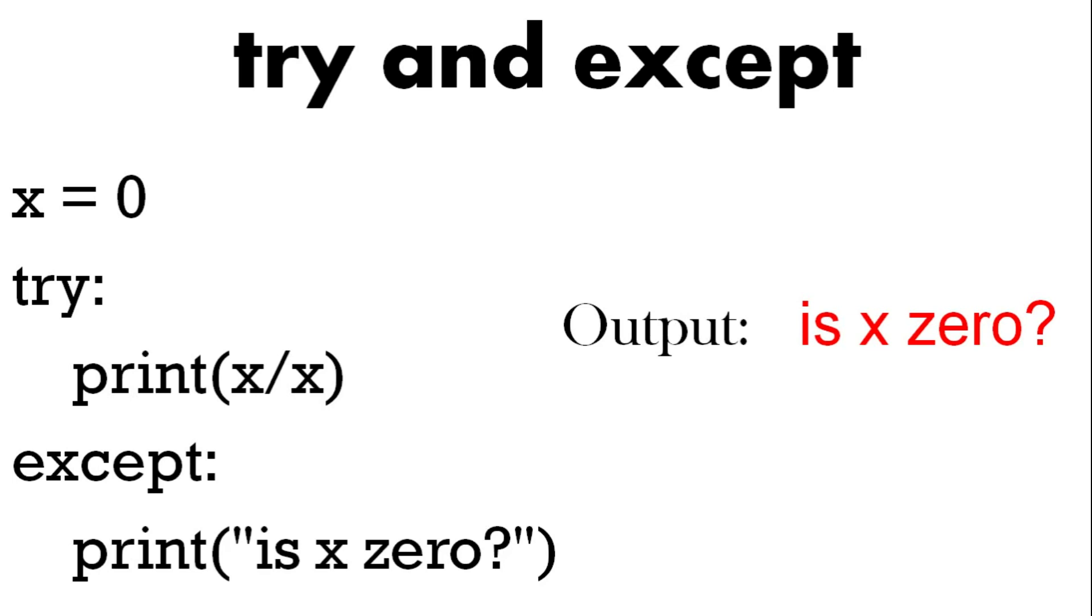So in this example, any integer divided by itself will equal 1, with the exception of 0. You can't divide 0 by 0. So the try will always work unless the integer is 0. So in this code, if x is 0, the except code says print is x zero. So that will be the output.